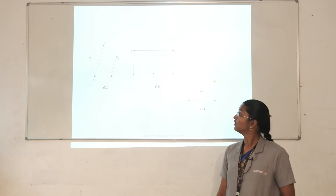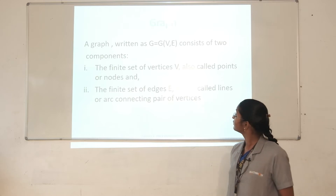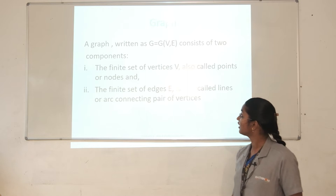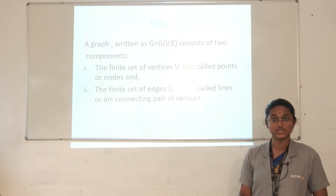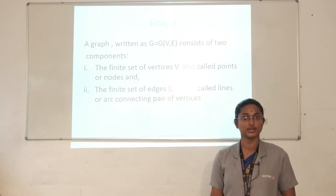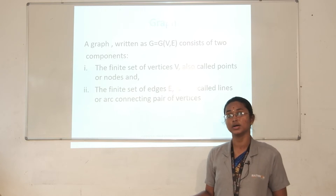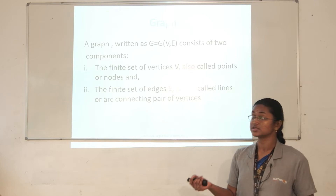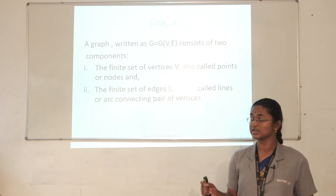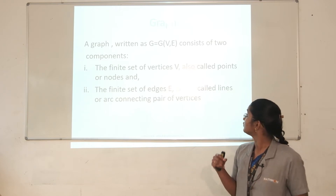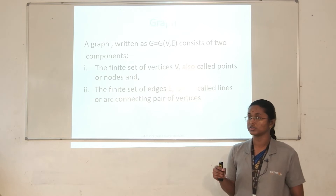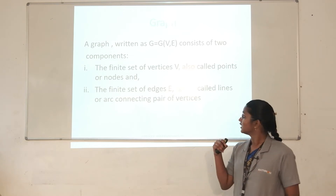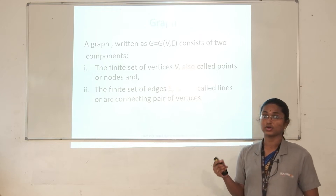First, we are defining what is a graph. A graph is written as G, denoted by G(V, E). It is an ordered pair of the set of vertices V and the set of edges E. The set of vertices is also called points or nodes. Similarly, the set of edges is called lines or arcs.